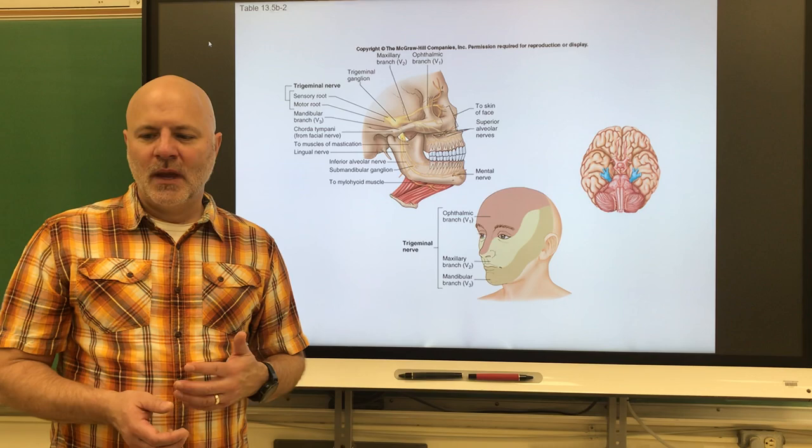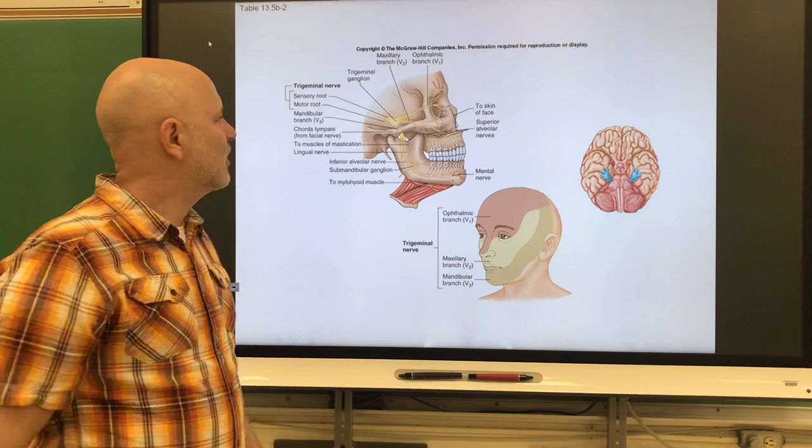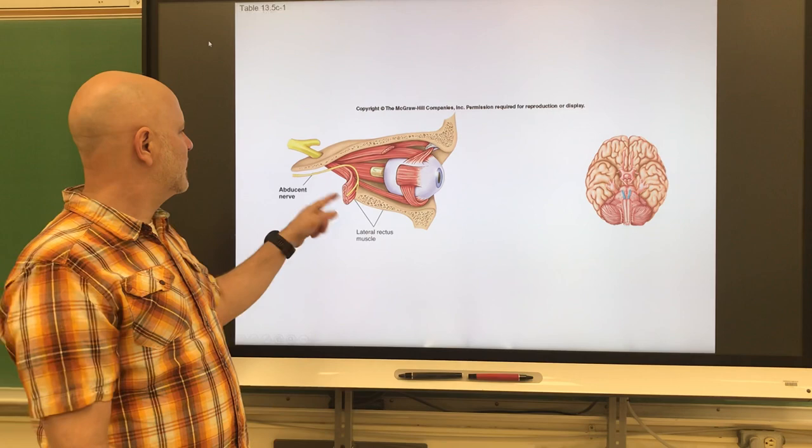Next is the trigeminal nerve, which is a mixed nerve — both motor and sensory. It is sensory on the face, scalp, and eyes, and it is motor for jaw movements. All the jaw movements we make go through the trigeminal. As you can see, it is a fairly large nerve.